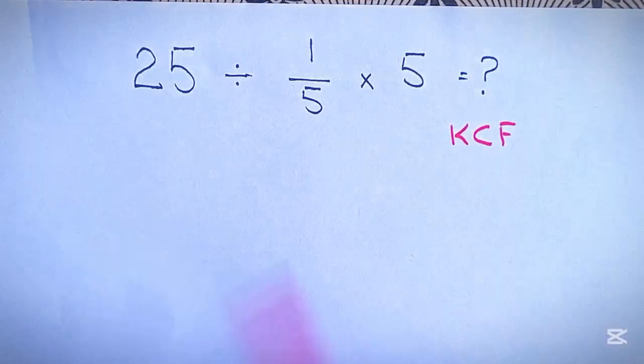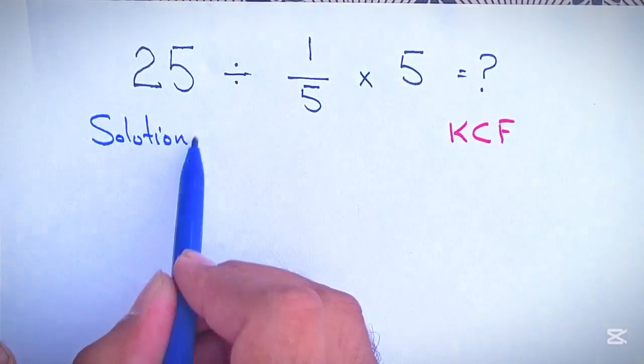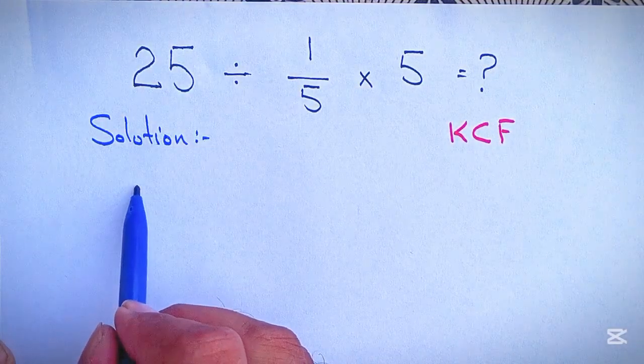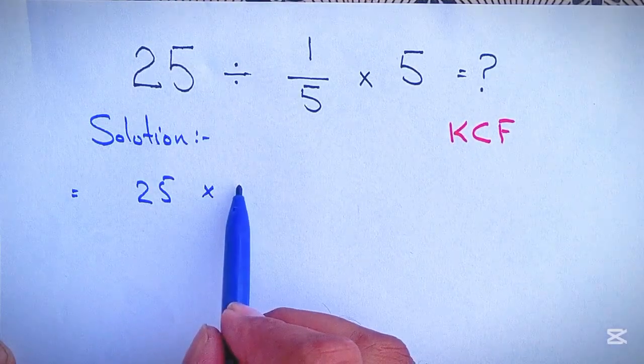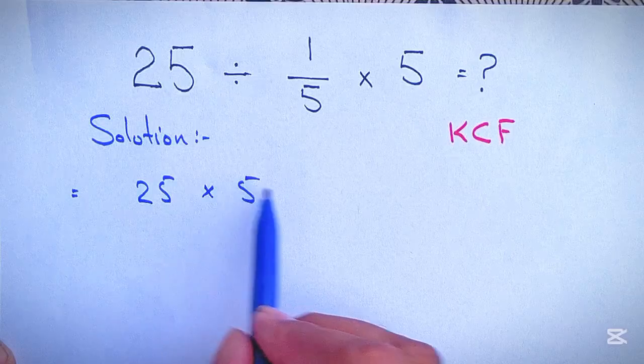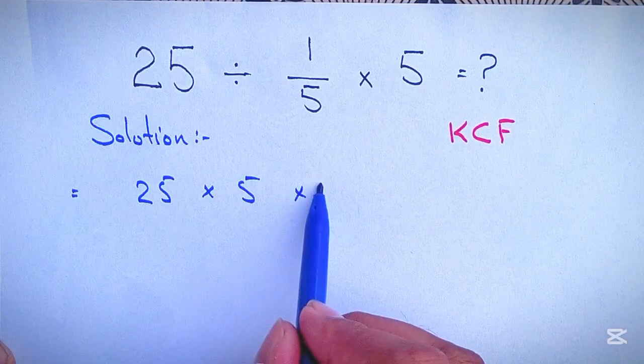The solution of this operation will be, according to KCF rule: first we have 25, change the sign from division to multiplication, and flip the second one 1 over 5 to simple 5, and then times 5.